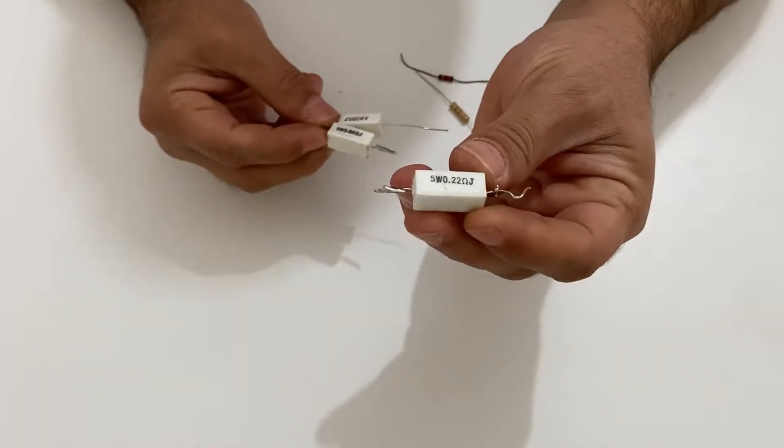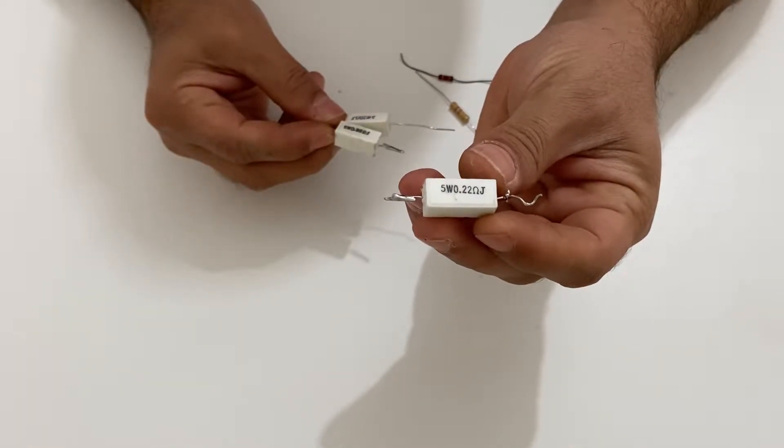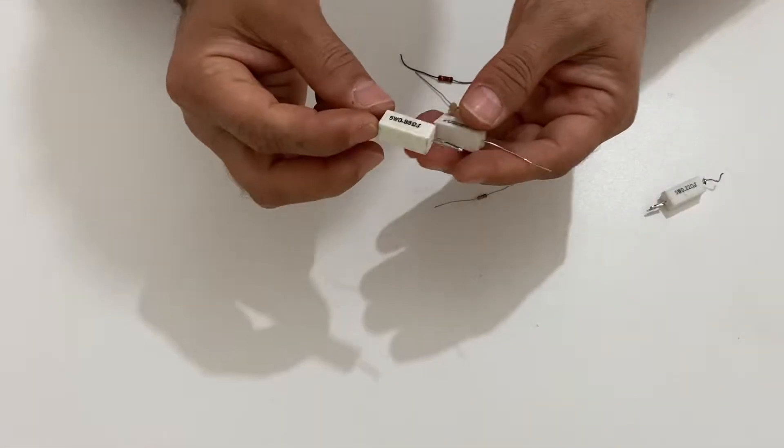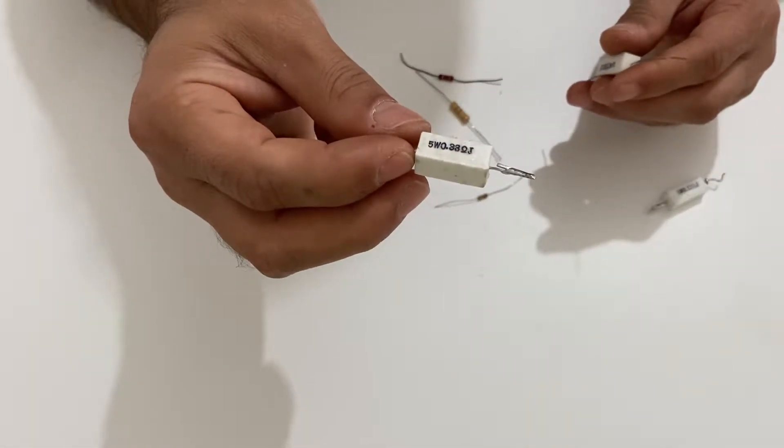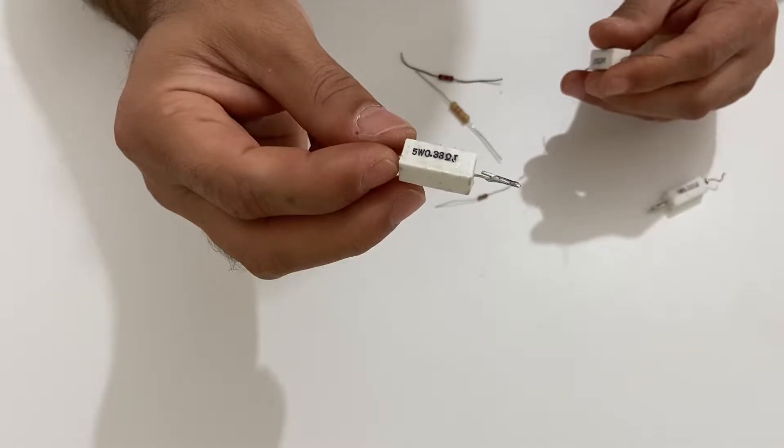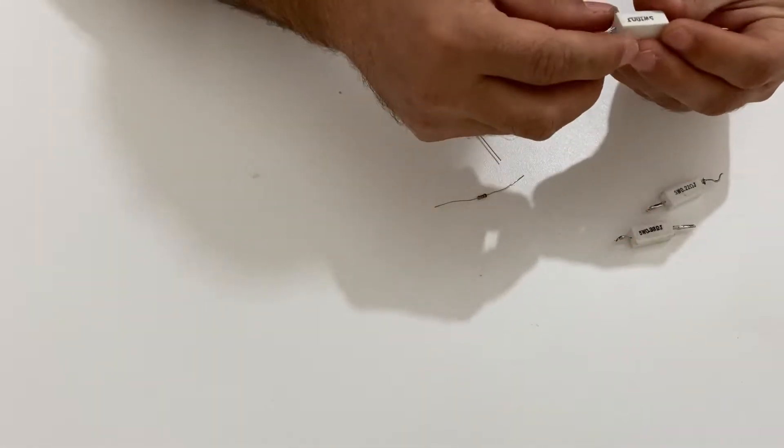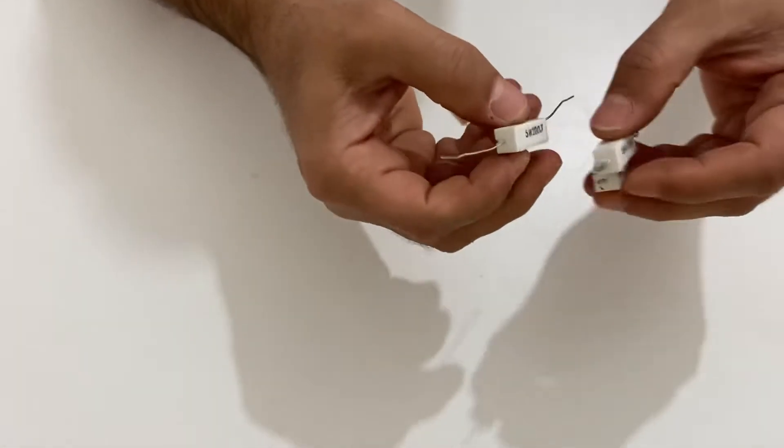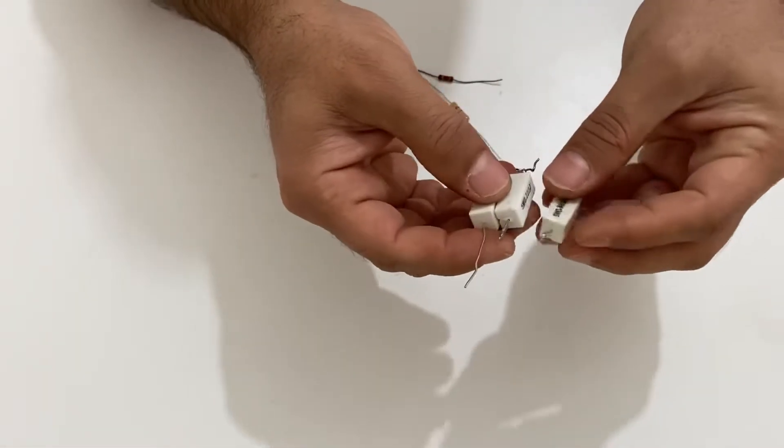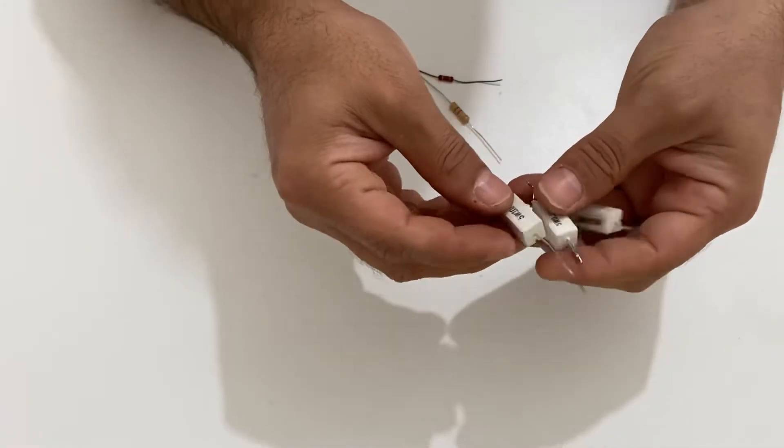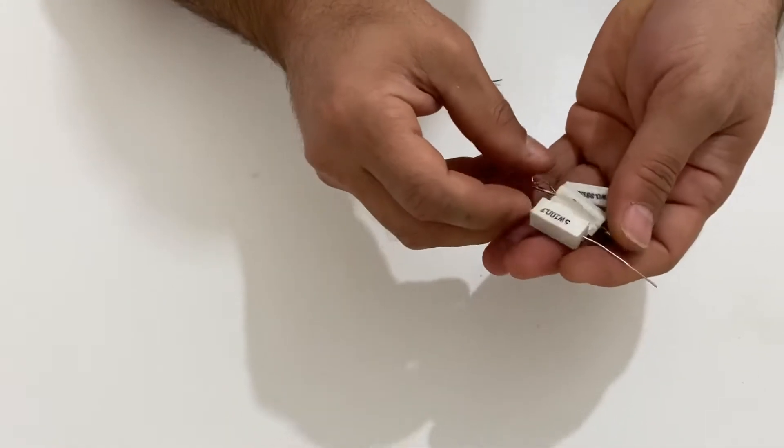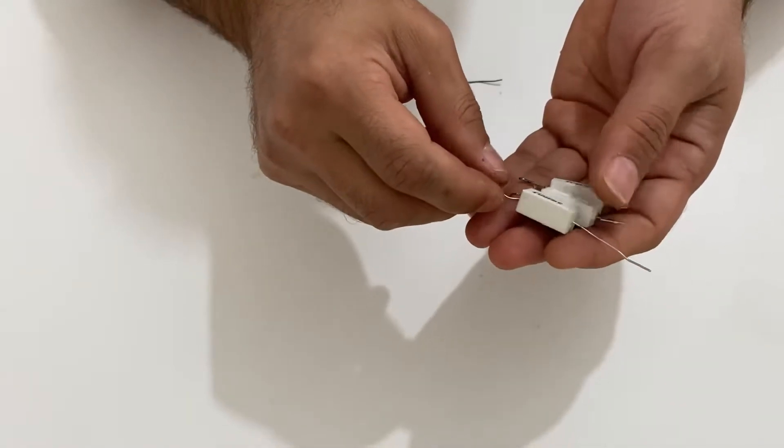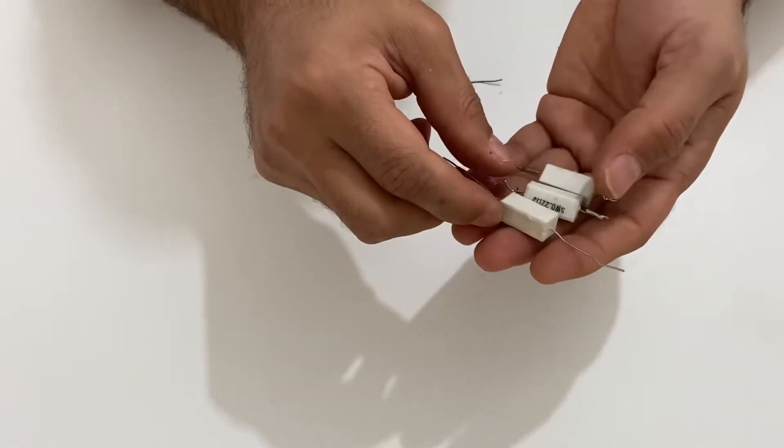Their value is 5 watt and 0.22 ohm resistors, and the other one 5 watts again 0.33 ohms, and this one is 5 watt 10 ohm resistors. These three resistors are a little bit expensive, more expensive than the other resistors. We use these types of resistors in powerful electronic circuits, in high current. Under high current we need these resistors.